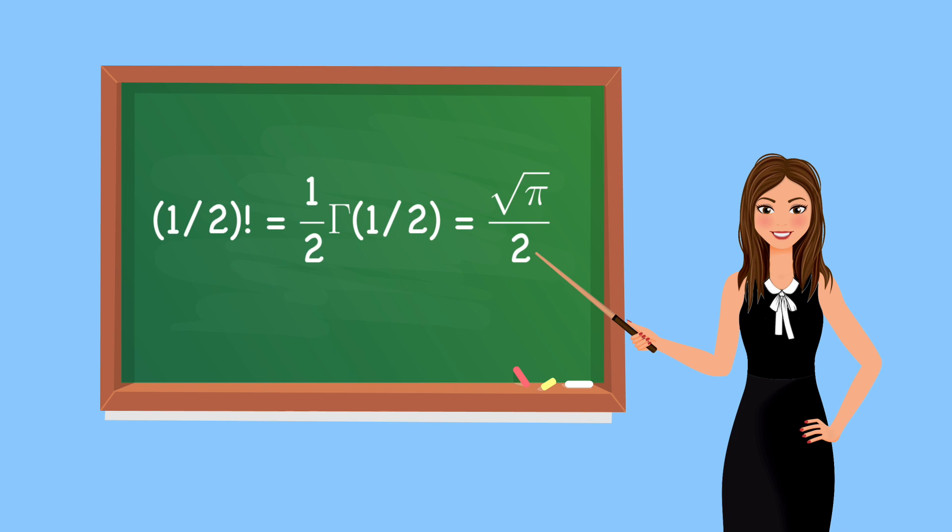And since n factorial is n times gamma of n, 1 half factorial is 1 half times the square root of pi, or the square root of pi over 2.